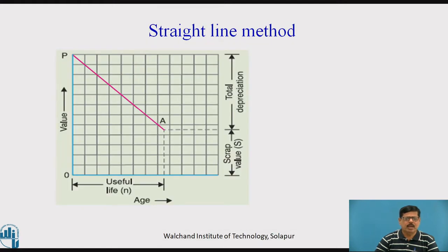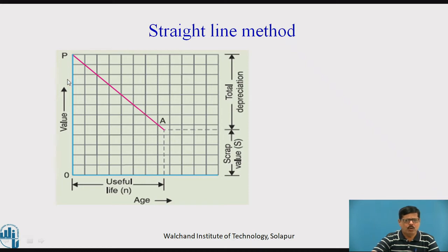As shown graphically, in this graph we have shown the value of the equipment. When the equipment is new, that is at zero years of age, its initial cost is P. At the end of the useful life of N years, its value becomes equal to S, that is the scrap or salvage value. The straight line P to A shows how the depreciation is uniformly applied throughout the useful life. The depreciation occurs uniformly over the entire lifespan, and P minus S gives the total depreciated value of the equipment.